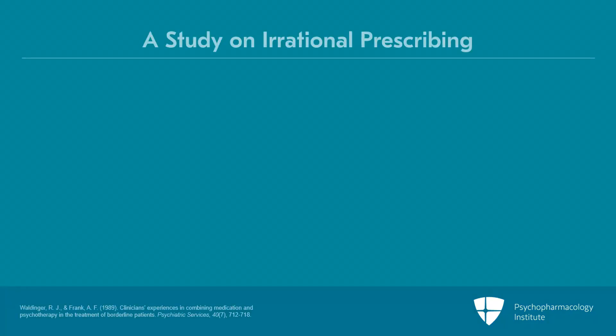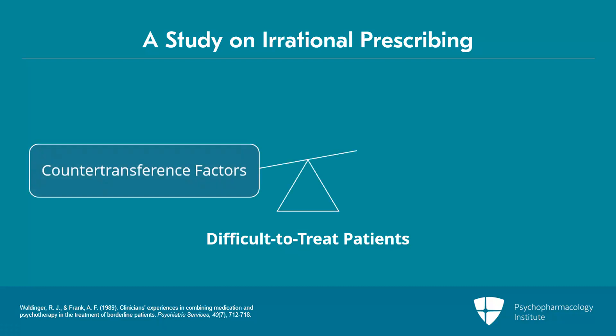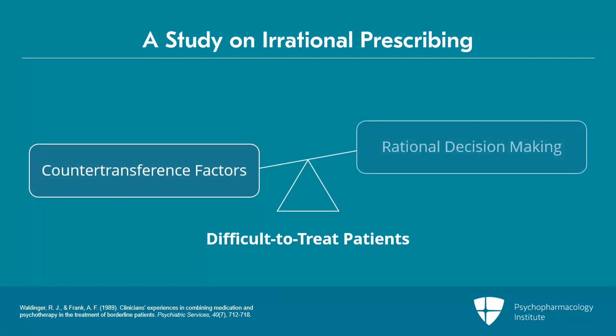There's some research on this where Walder and Frank found that for difficult-to-treat patients in the cluster B range, countertransference factors in their analysis seemed to outweigh rational decision-making in the prescription of medication. So there were often complex, difficult-to-bear feelings stirred up in the doctor that started guiding treatment decisions.